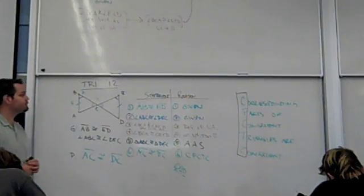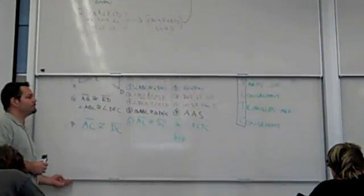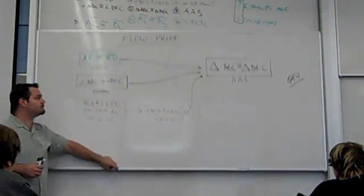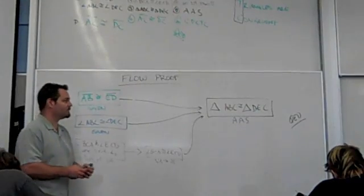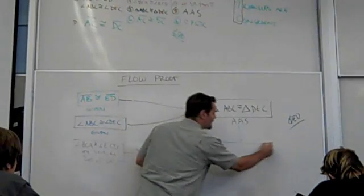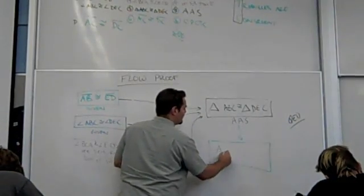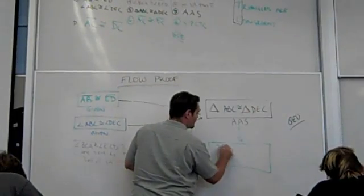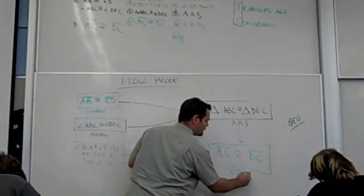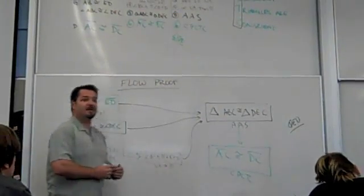Question? On the flow proof, would you just have the congruency stack have another arrow into CPCTC? Exactly. From this triangle congruence, you expect to make one more statement? That's it.